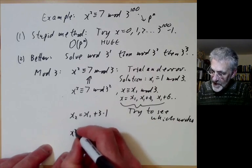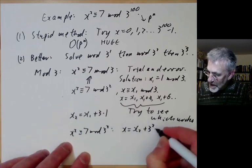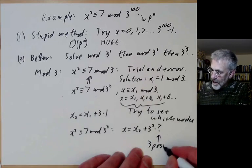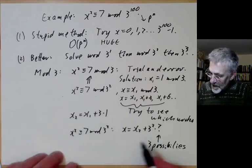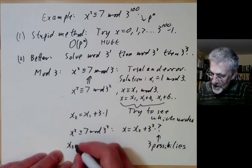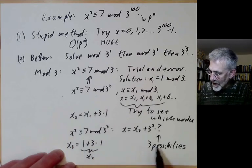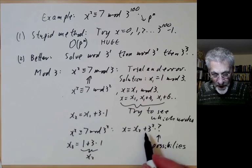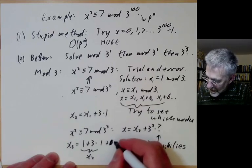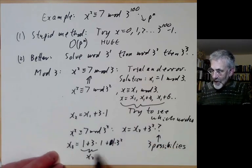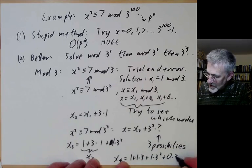We do the same thing to solve x² ≡ 7 mod 3³. We try x = x₂ + 3²·(something), and since 3 is a small prime there are only three possibilities. We find x₃ = 1 + 1·3 + 1·3². Continuing, x₄ = 1 + 1·3 + 1·3² + 0·3³.